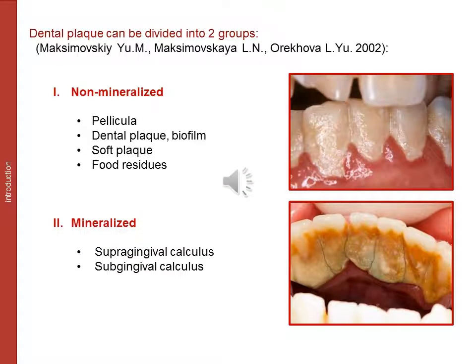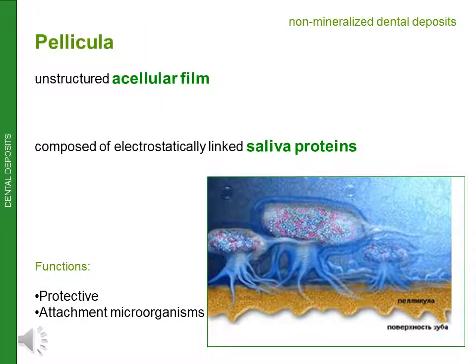Dental deposits can be divided into two groups. Non-mineralized deposits include: pellicle, dental plaque, soft plaque, and food residues. Mineralized deposits include supra-gingival and sub-gingival calculus. The pellicle is an unstructured, acellular film composed of electrostatically linked salivary proteins. Its functions include protection and attachment of microorganisms.